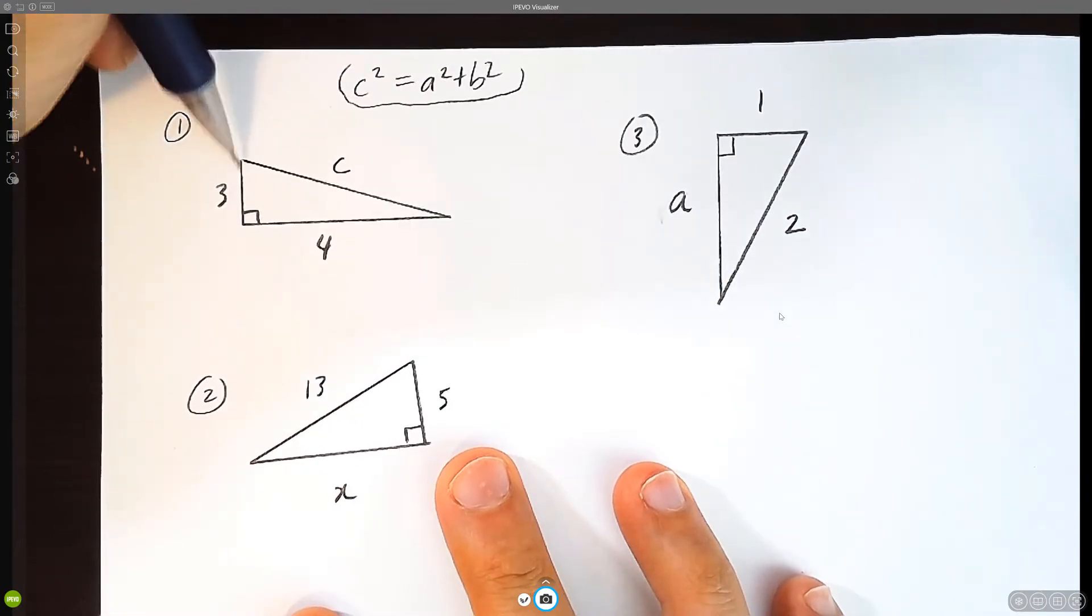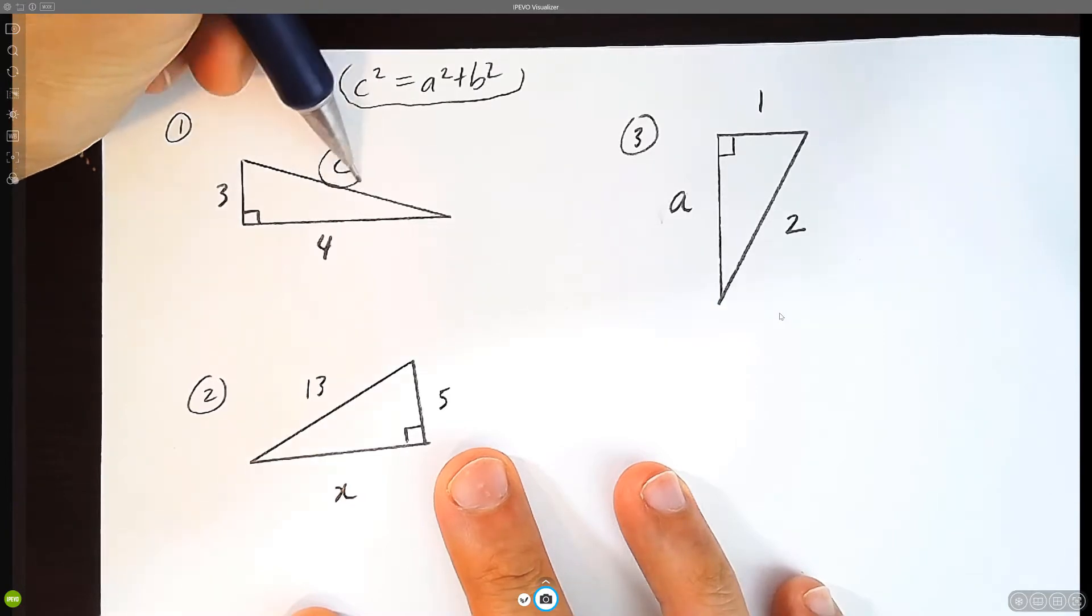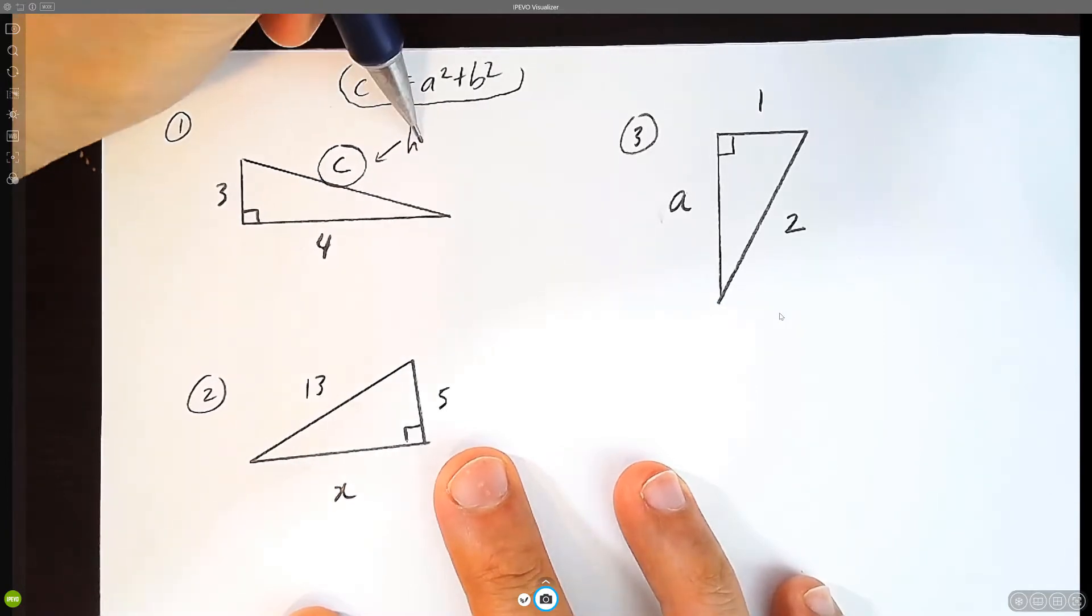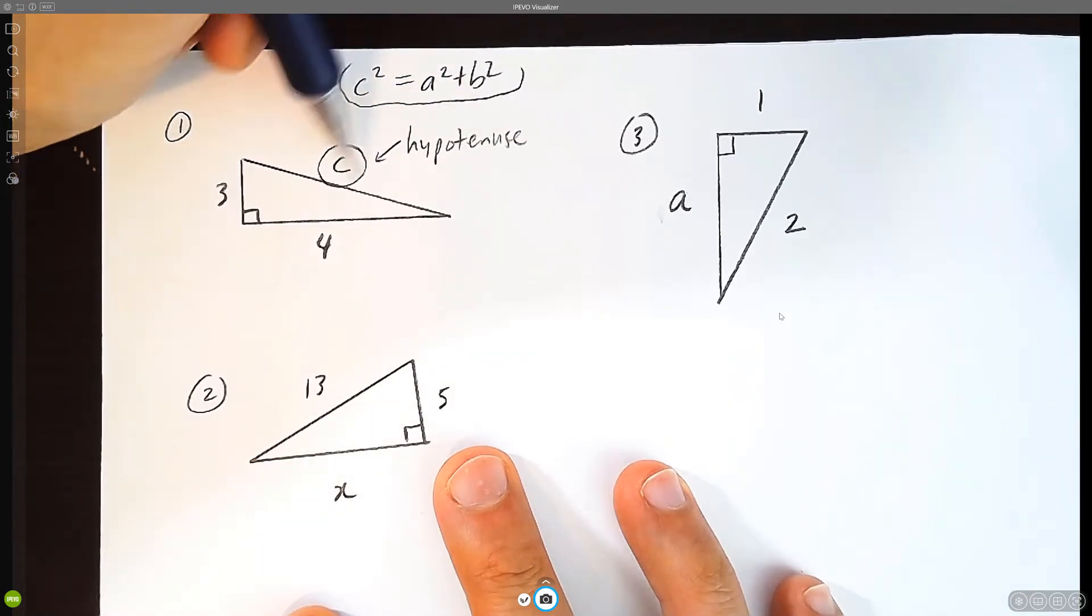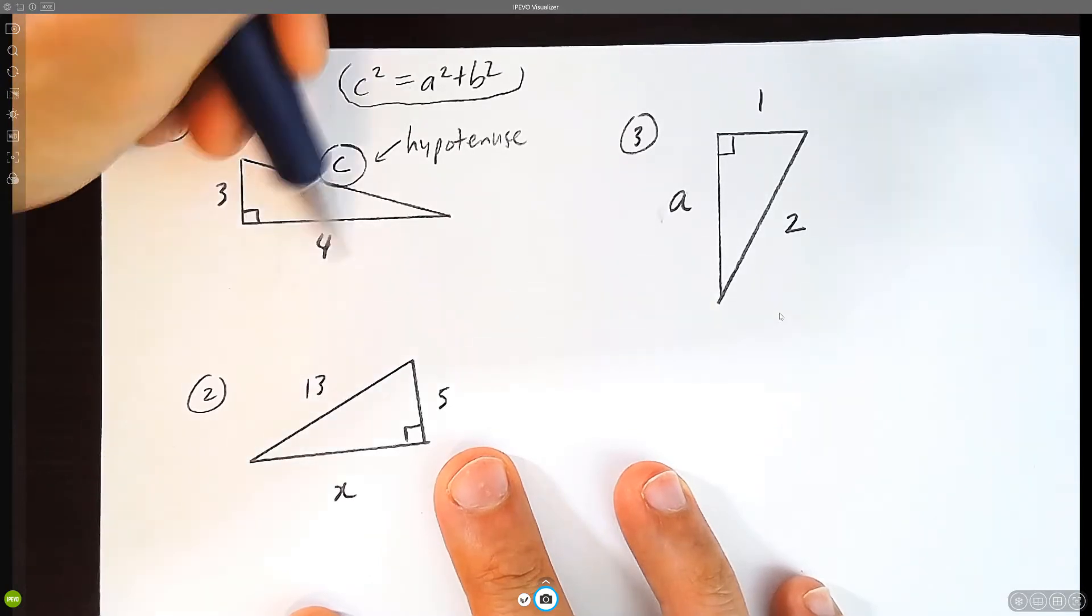Pythagorean Theorem works when you have a right triangle. It's saying that the longest side squared, which is called the hypotenuse, this is called the hypotenuse. The hypotenuse squared, this number, this side length squared is equal to this squared plus this squared.